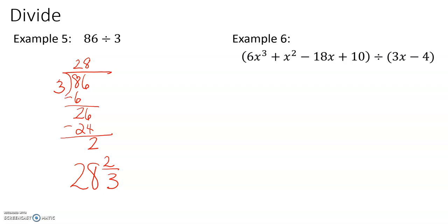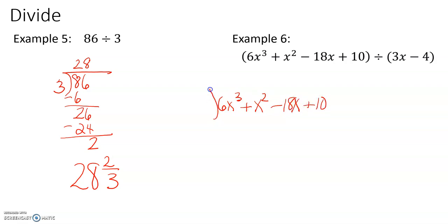Now let's look at Example 6: 6x cubed plus x squared minus 18x plus 10 divided by 3x minus 4. Take your time and set up your division: 6x cubed plus x squared minus 18x plus 10, divided by 3x minus 4.